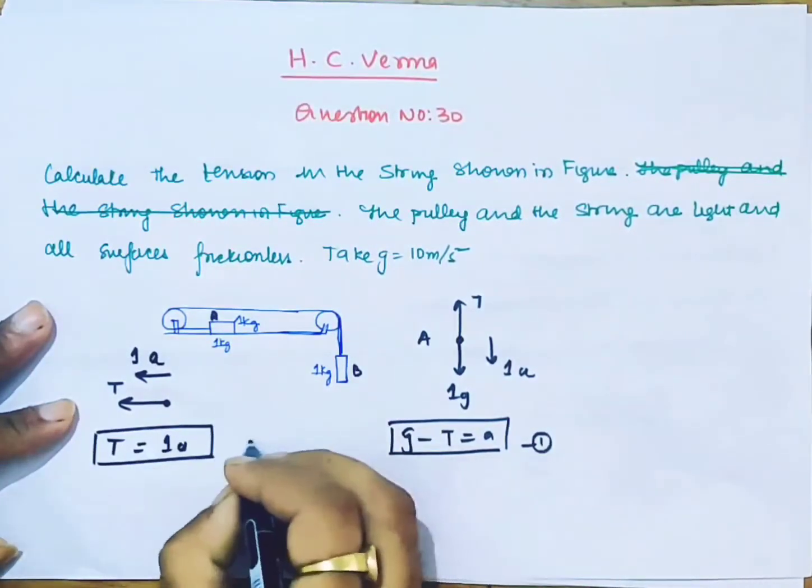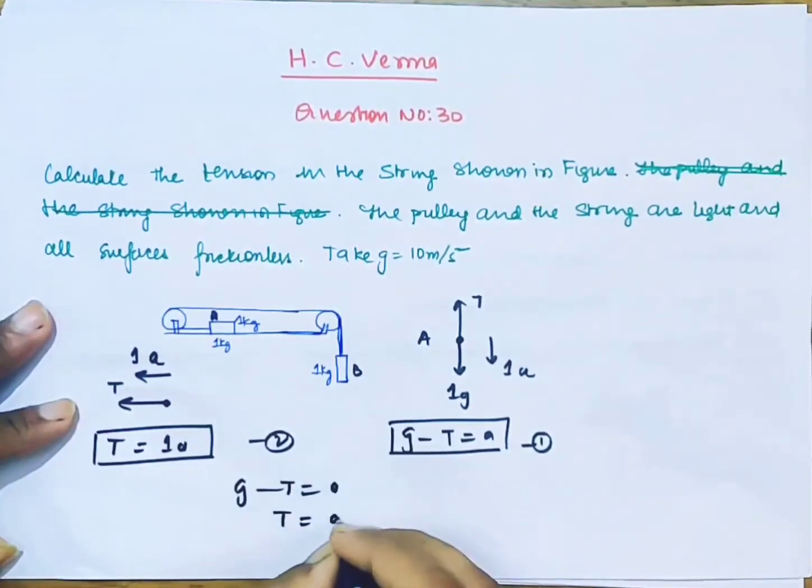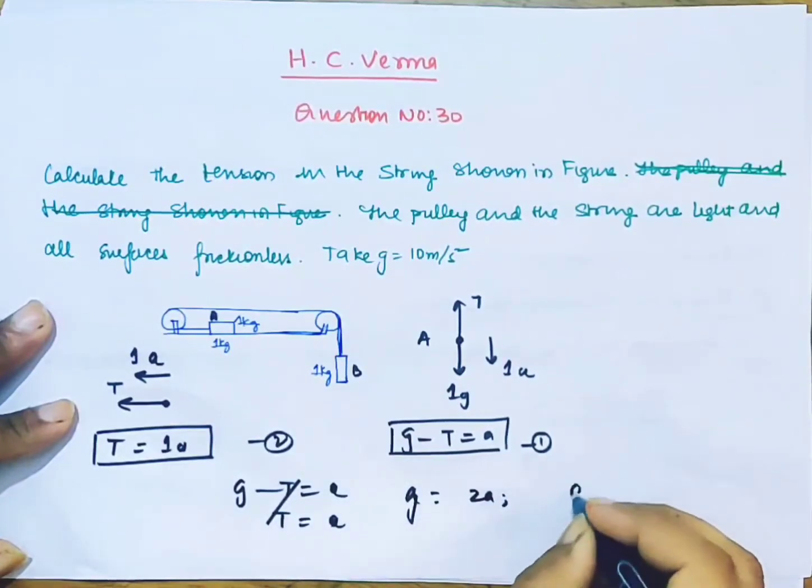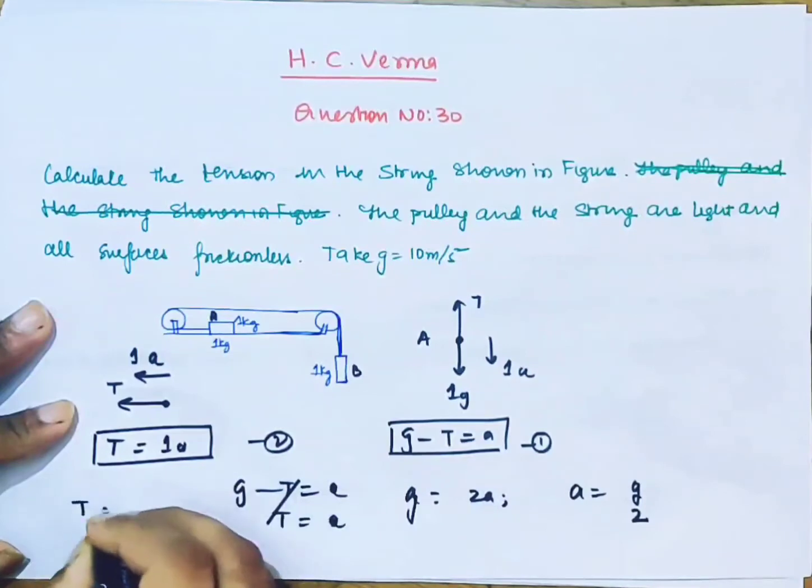Now you can solve it. T equals a and g minus T equals a. Cancel. So g equals 2a, a equals g by 2. Now you can simply write, T equals a, so T equals g by 2.